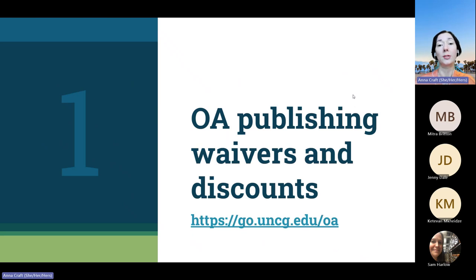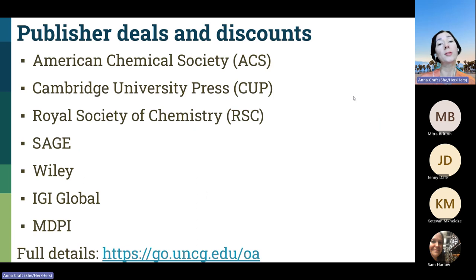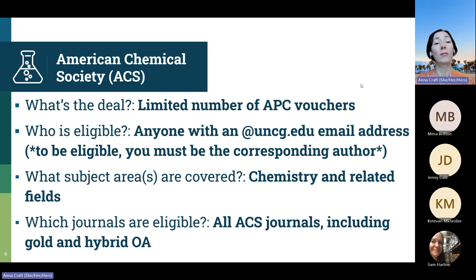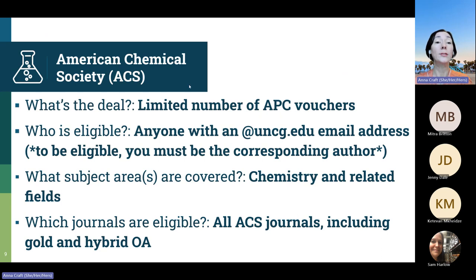So let's dive into the open access publisher deals that we have. These are the publishers that we're working with right now, and we'll talk about each of them in more detail on the following slides. So ACS, the American Chemical Society, is the first one. We have a limited number of APC vouchers with them, and these vouchers cover the full cost of publishing open access articles with ACS. These are available to anybody at UNCG who has a uncg.edu email address, although you have to be the corresponding author of the manuscript in order to use one of these vouchers.